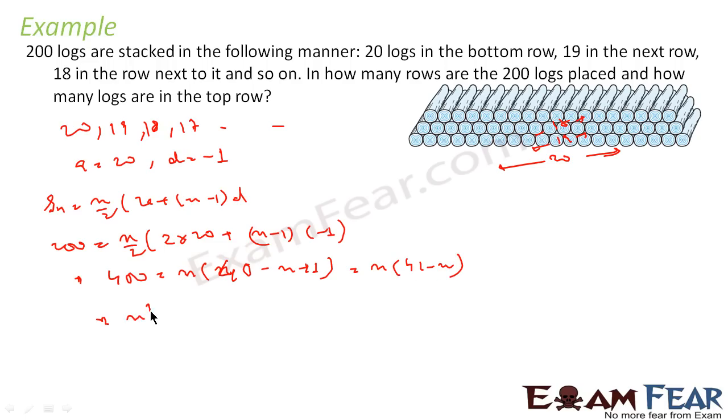So the equation I got is: n² - 41n + 400 = 0. Or factorizing, n² - 16n - 25n + 400 = 0. Or you can see this is nothing but n(n - 16) - 25(n - 16) = 0. So n is equal to 25 or 16.